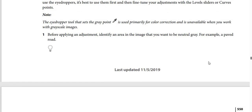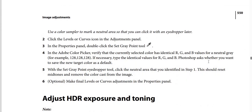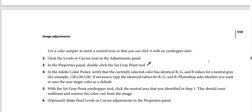Before applying an adjustment, identify an area in the image that you want to be natural gray — for example, above the road. Use a color sampler to mark a natural area so that you can click it with an eyedropper later.